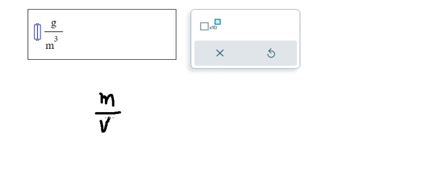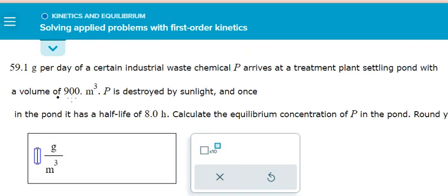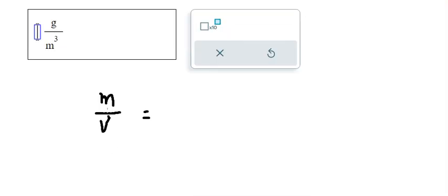Now for this m, that is the mass that's destroyed by sunlight, and we have the half-life that is about 8 hours. So the formula of m should be like this.